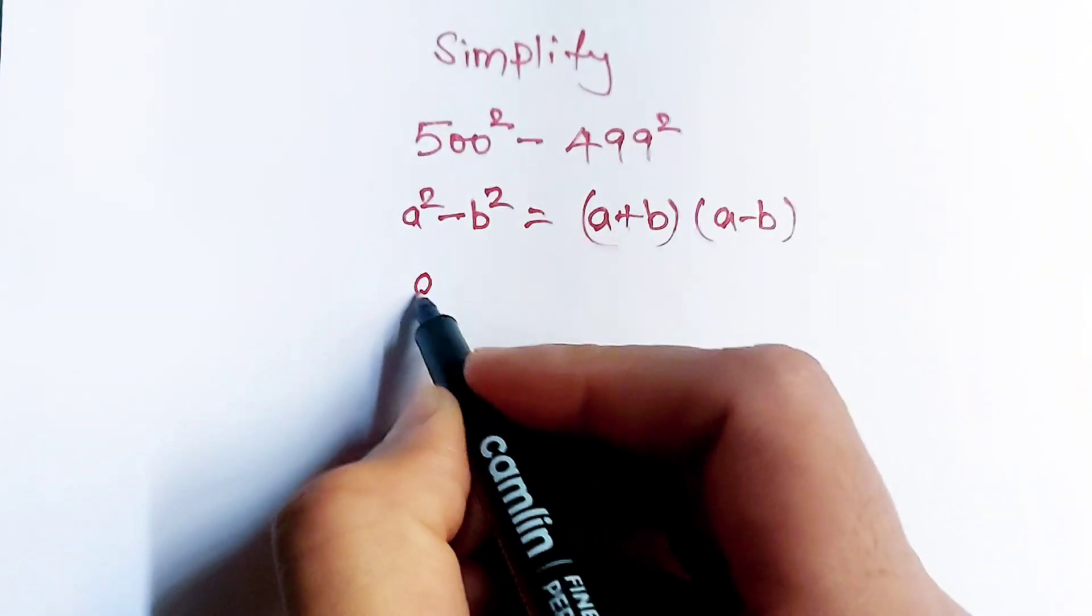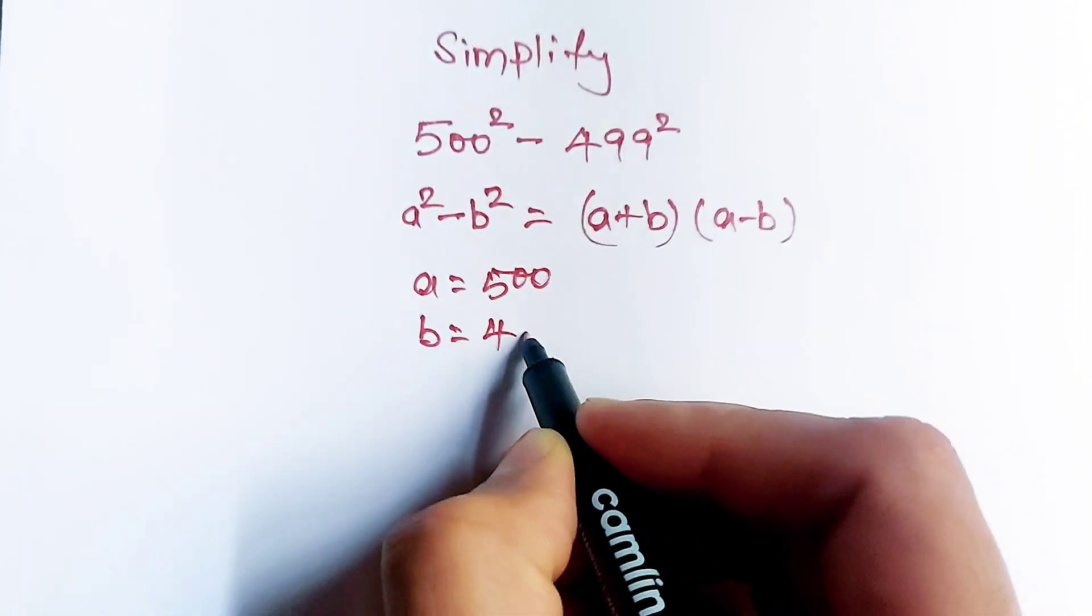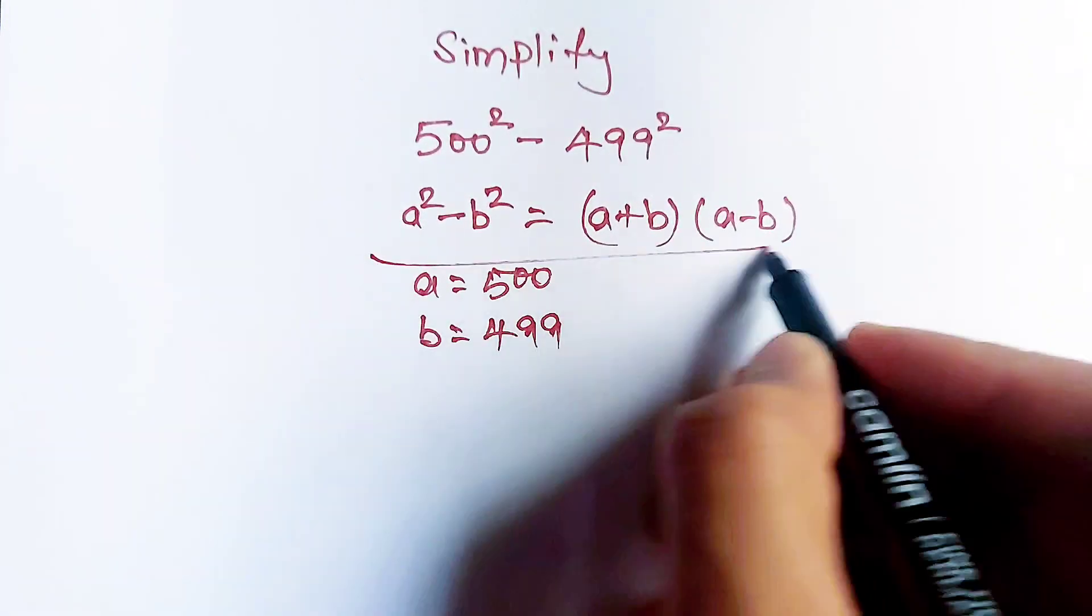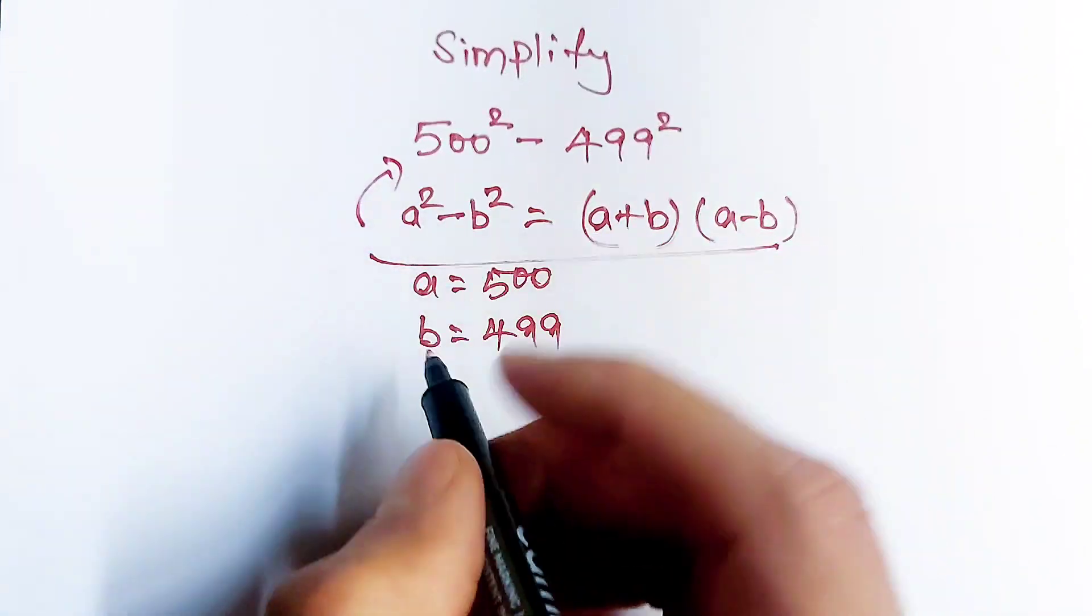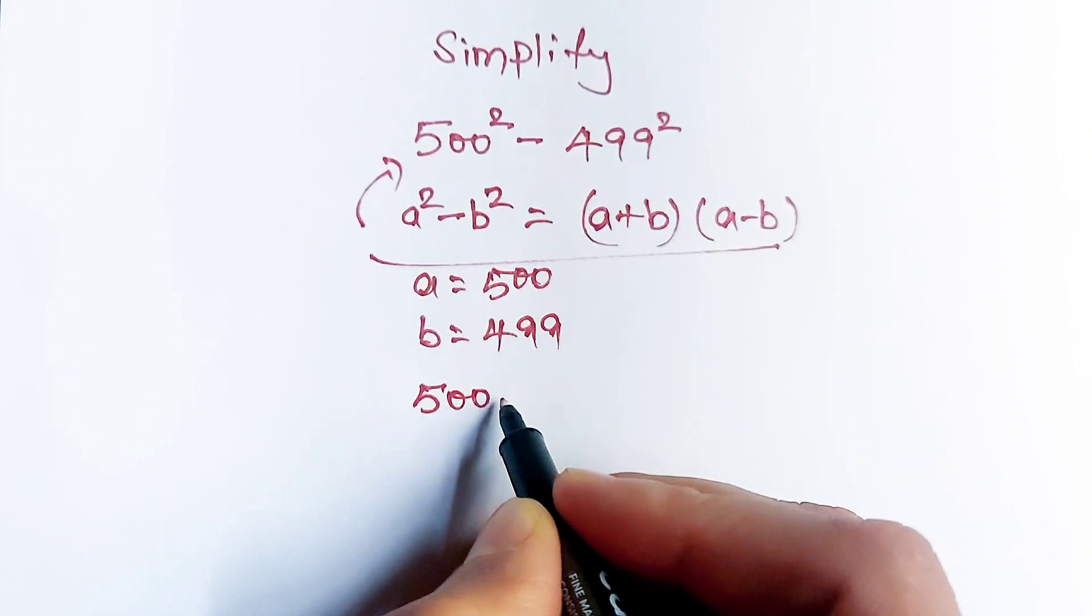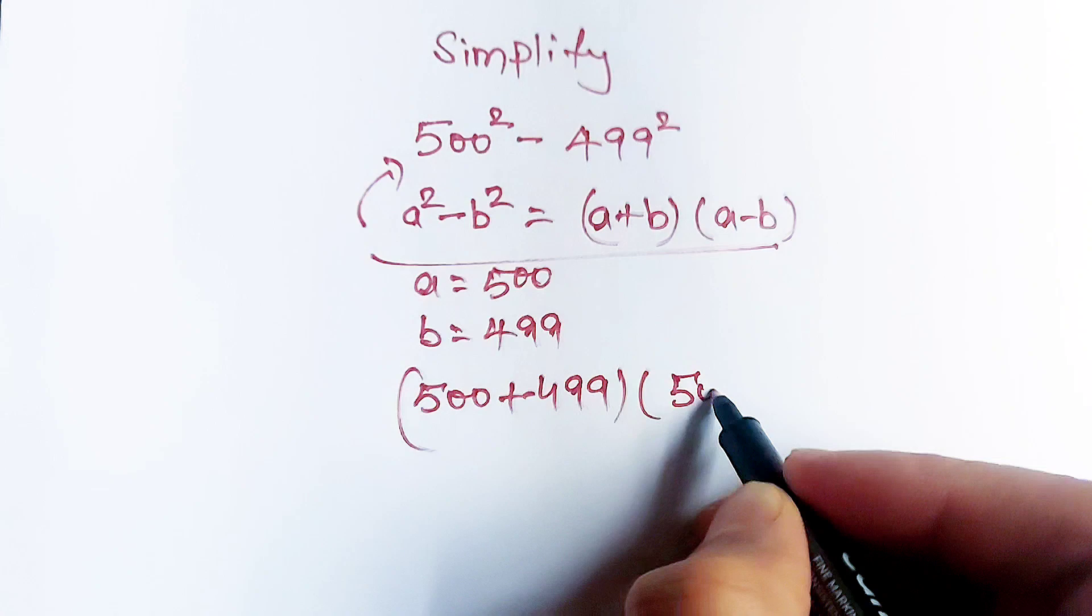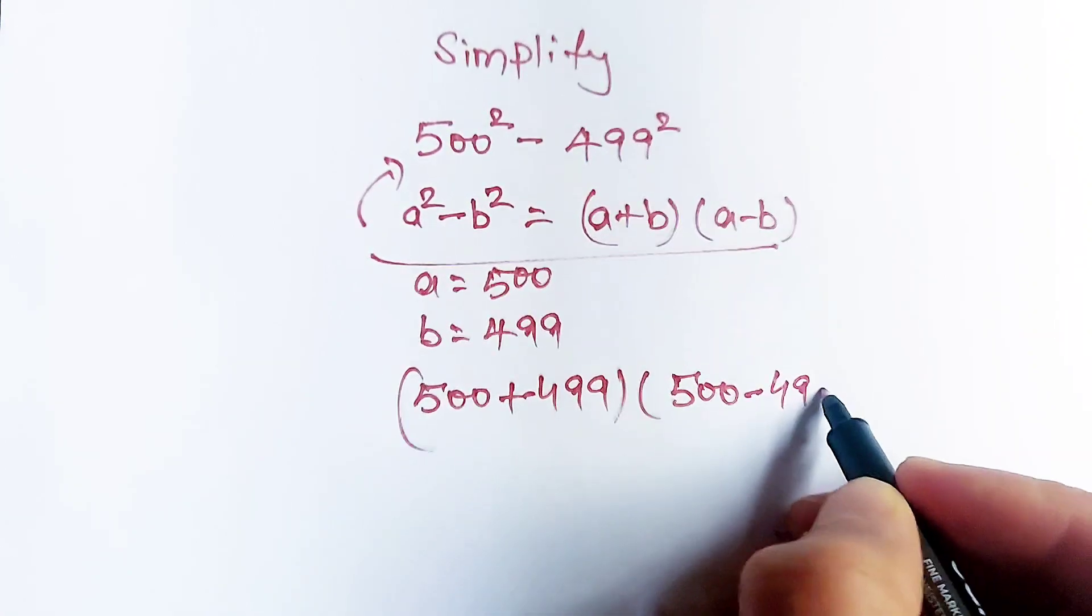Here a is equal to 500 and b is equal to 499 and apply this formula here. Now 500 plus 499 multiply 500 minus 499.